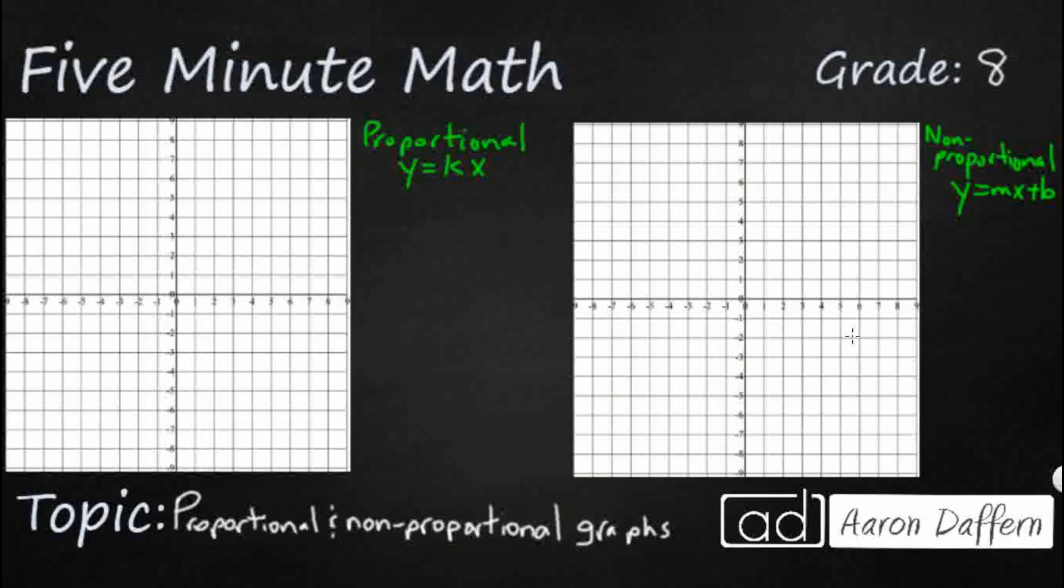So our proportional relationships are going to take this simple form, y equals kx. Let's say our k, which is our constant of proportionality, let's just give that a pretty simple 2. We're going to double x, and it's going to become our y. Let's just look at a few x and y coordinates here.